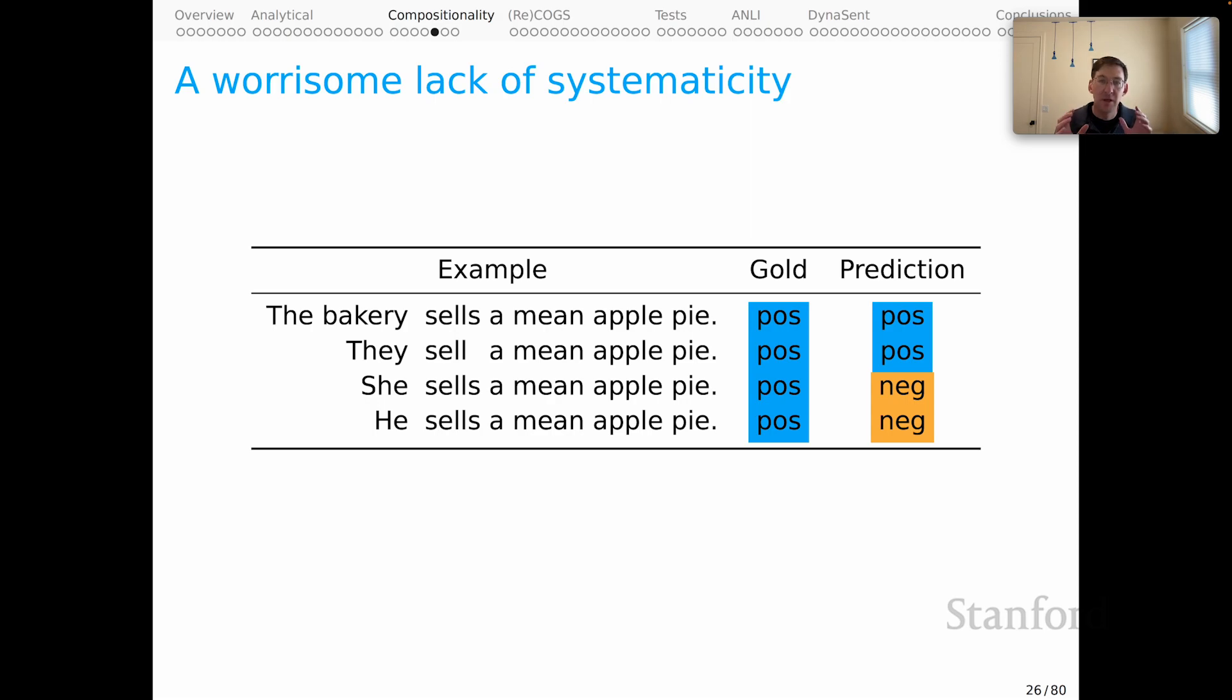This is from a real sentiment classification model that I developed that I thought was pretty good. And I started posing little challenge problems to it. And I was initially very encouraged by these examples. The bakery sells a mean apple pie is generally a positive claim about this bakery's pies. And it involves this very unusual sense of mean, which essentially means good. A mean apple pie is typically a good one.